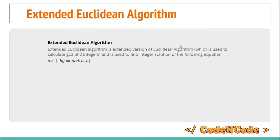The first question is: what is the Extended Euclidean Algorithm? As the name suggests, it is the extended version of the Euclidean algorithm, which is used to find or calculate the GCD of two numbers a and b. The extended algorithm can be used to find integer solutions of the equation of the form ax + by = gcd(a, b), where a and b are provided integers and x and y are unknown integer variables.